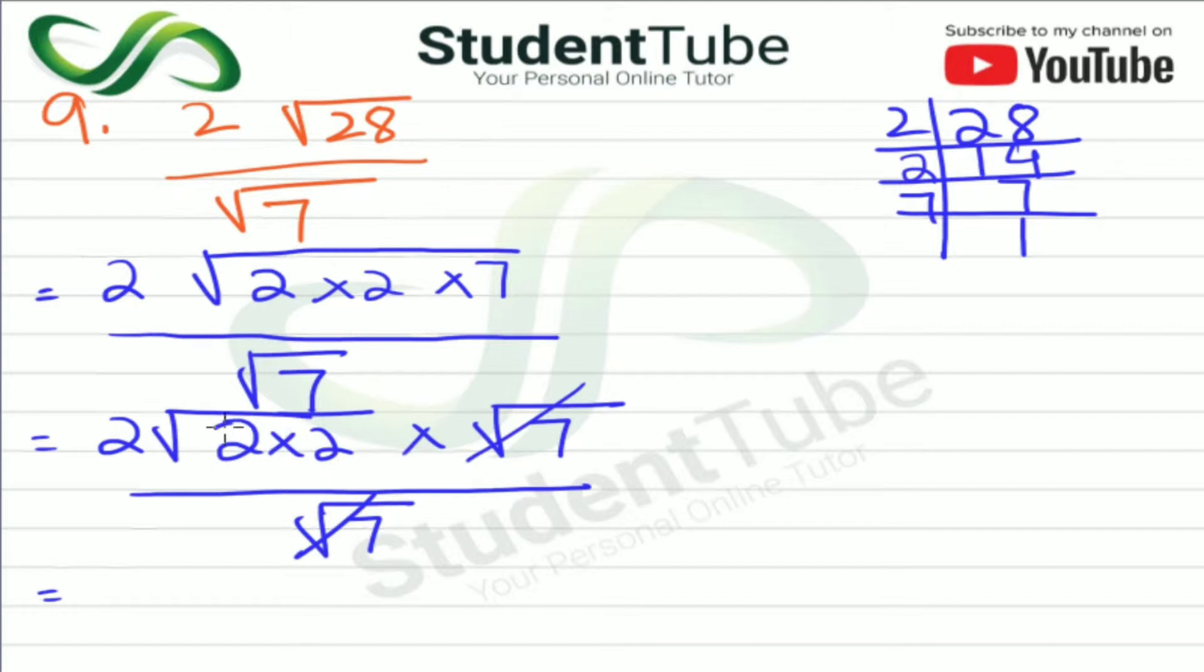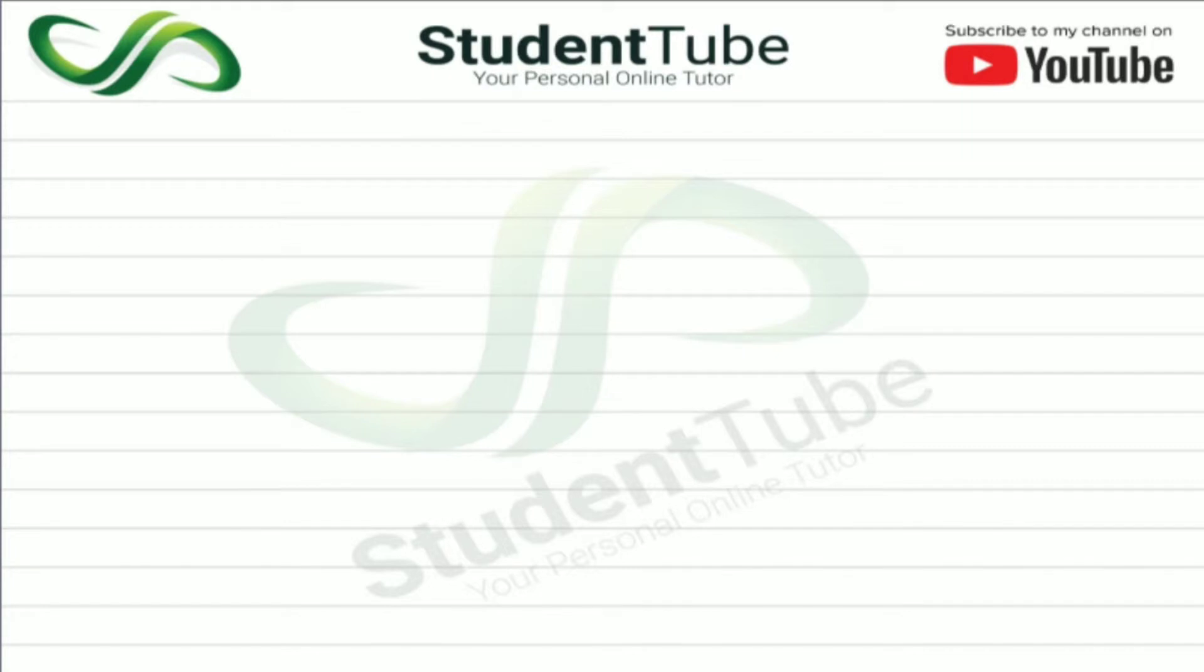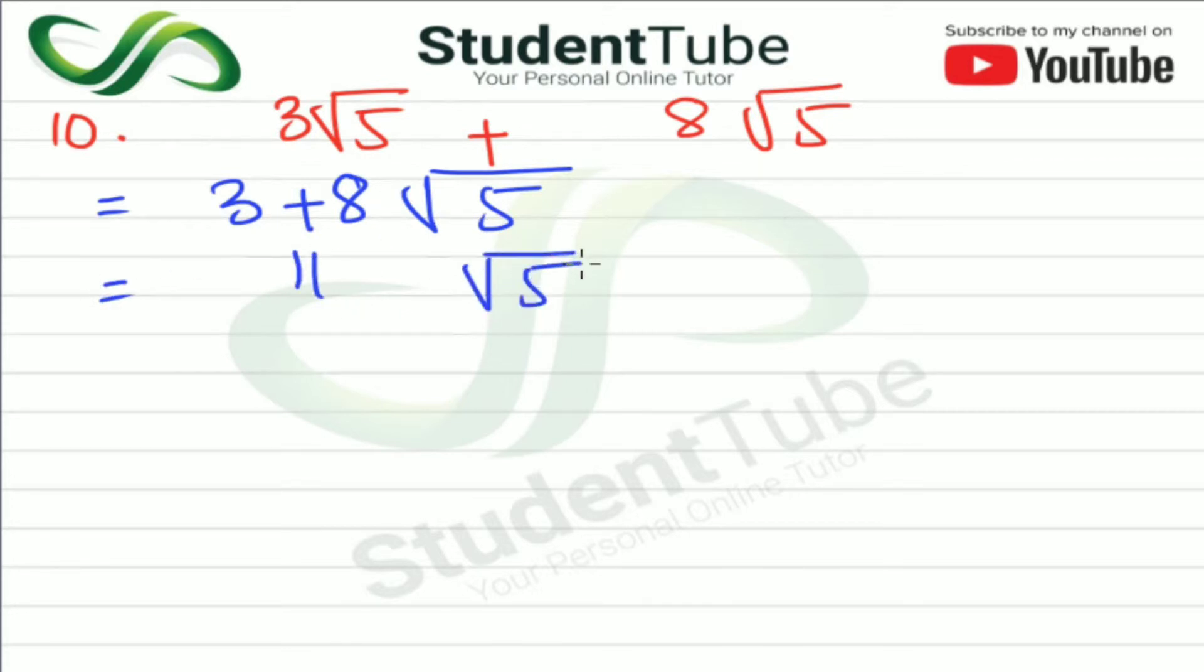Question number 10 is 3 under root 5 plus 8 under root 5. Now in this question, what we have to do is we will take 3 and 8 this way, 3 came and 8 came. Now under root 5 will be our common. Now 3 and 8, how much did it become? 11, and under root 5 came this way. Answer.